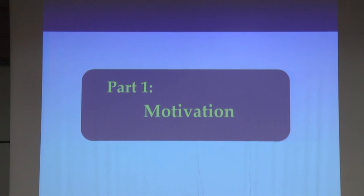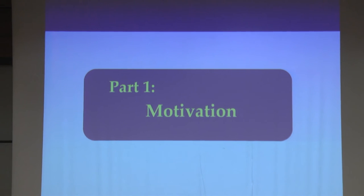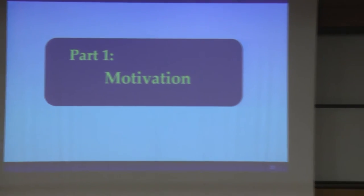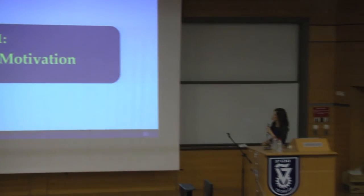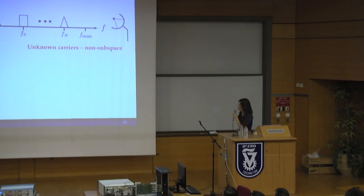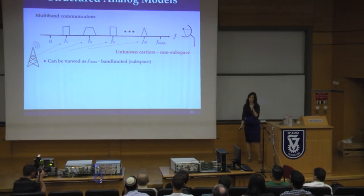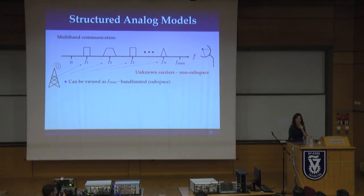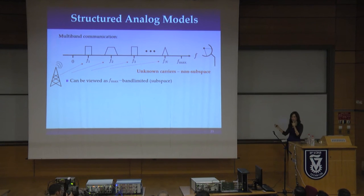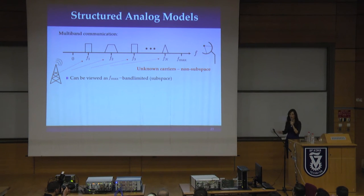Let me start with motivation by looking at examples where structure naturally exists. One of the first examples is the multiband problem: you have a signal spread over a very wide spectrum, but it consists of several narrow bands. In reality, most of the spectrum is going to be zero, but the difficulty is that you don't know where these bands are located. You could sample at the Nyquist frequency at f-max and clearly recover the signal, but this is obviously wasteful since most of the signal spectrum is actually zero.